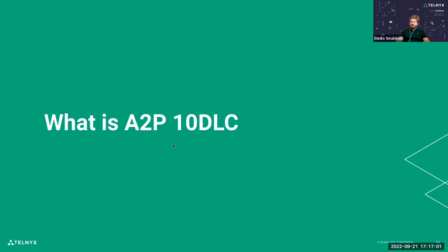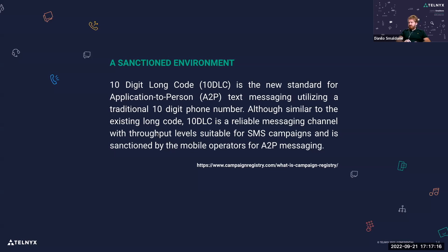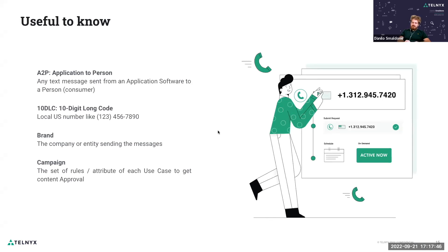To go a bit deeper, after we received information on the usage of SMS in the market, we would like to present what A2P 10DLC is. A2P 10DLC is the new way of sending messaging — application to personal messaging. This was standardized by the Campaign Registry, which is the authority taking care of this in the US market, and everything is based on the long code number. The TCR defines things to allow you to have a better user experience in the SMS market.